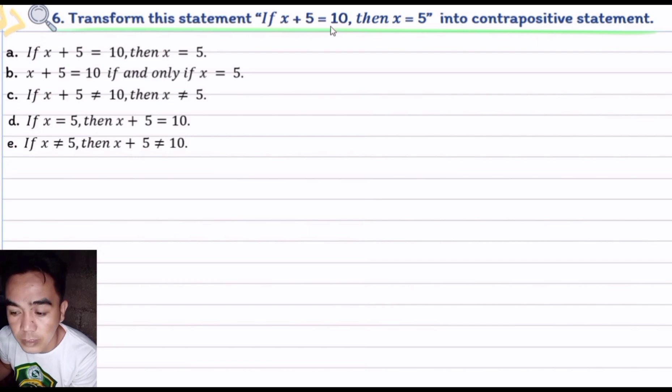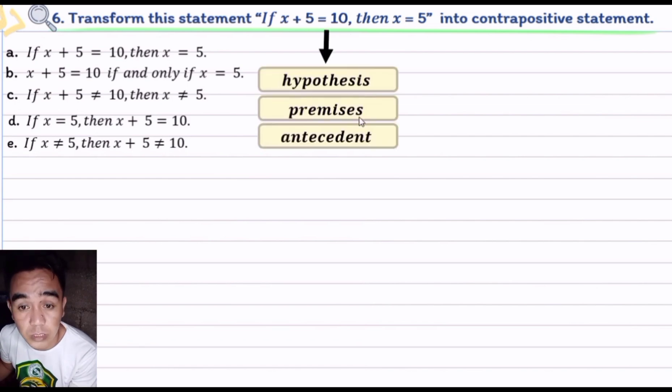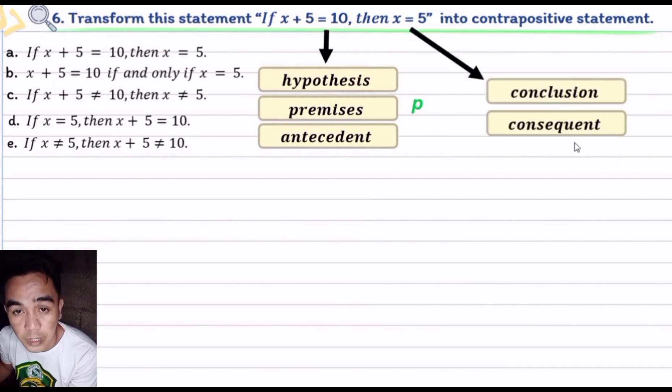We're able to determine each term in this part. When we say x plus 5 equals 10, this is what we call hypothesis, premises, or antecedent, and it is commonly denoted as letter p. While x equals 5 is what we call conclusion or consequent, and it is commonly denoted as the letter q. These are the different terms that we need to consider to fully understand the problem as well as the options.